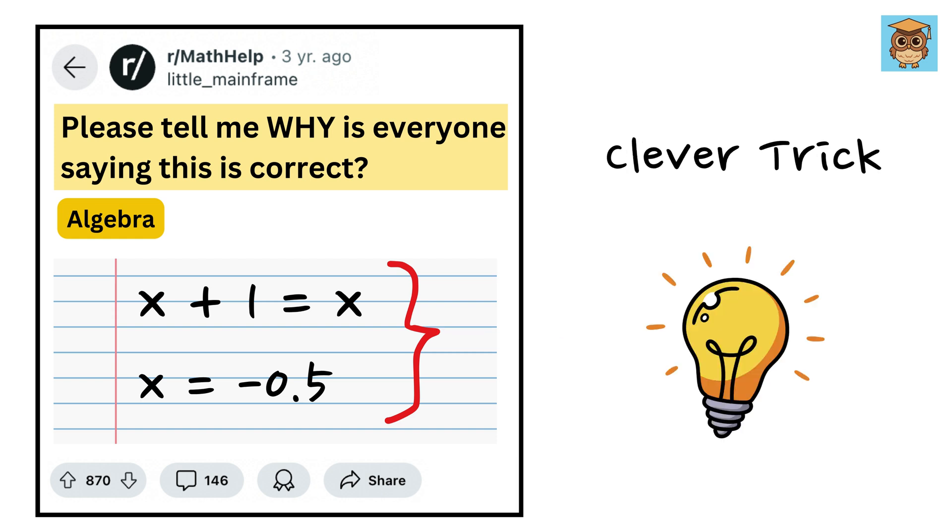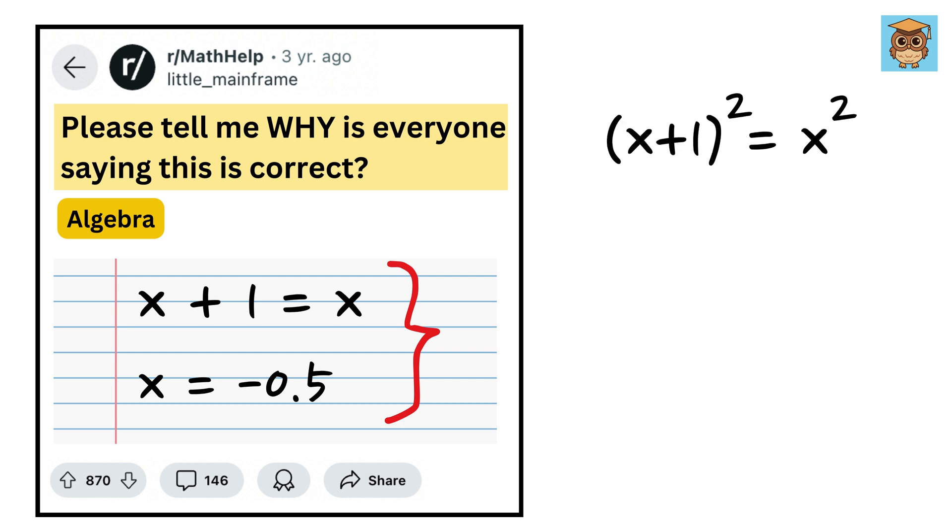However, this equation has gone viral because people are trying to show a clever trick. They manipulate it in a way that at first glance makes it seem correct. The trick starts by squaring both sides of the equation.